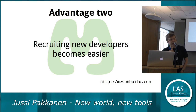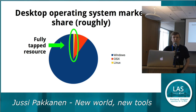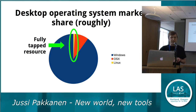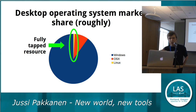Recruiting new developers becomes easier. Look at the operating system market share graph: there's Linux, and there's Windows. Most people who are running Linux are already developing on Linux — they're already there. Advertising to them is not going to get you much. The people on OS X and Windows are the ones we want to market towards, the ones we want to convert, because there's lots of untapped potential there.